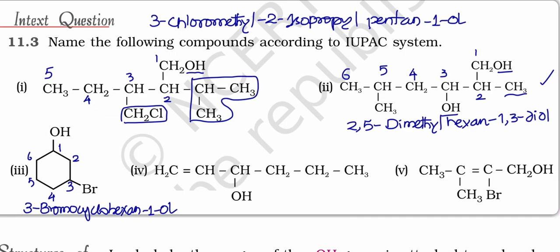Now here double bond is there. Double bond is not prior. OH is prior. But luckily we are getting lowest number for double bond also. Total six carbons are there. Hex. First place double bond - en. Third place OH. It is primary suffix. This is secondary suffix. Hex-1-en-3-ol.